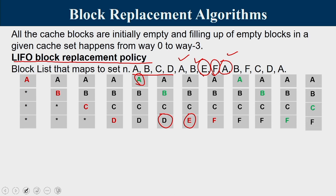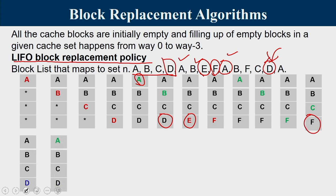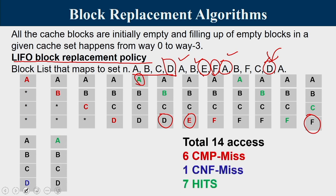Continuing Mode 2: A is a hit, B is a hit, F is a hit, C is a hit. D is requested — conflict miss (D was previously evicted). Last in is F, so F is replaced with D. A is then requested — hit. Final statistics for Mode 2: 6 compulsory misses, 1 conflict miss, and 7 hits out of 14 total accesses.